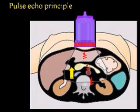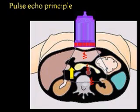The pulse echo principle works as follows: from the piezoelectric crystals in our probe, ultrasound beams are propagated in a pulse wave fashion at small intervals. When these beams get reflected back from tissue in our body, by measuring the time between sending the ultrasound and receiving the reflected signal, the machine determines the distance at which that reflector is situated. This is how different tissues are assigned different depths in the image.